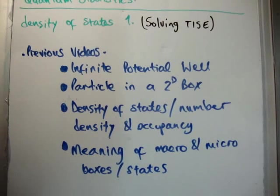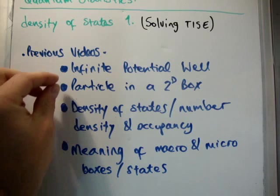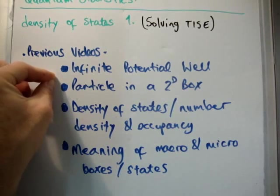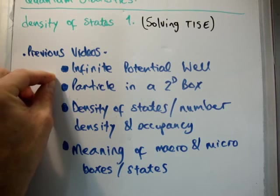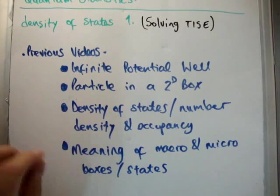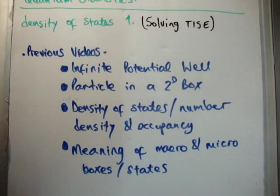So, the previous videos to this are as follows. In my quantum well section, I'd like you to look at the infinite potential well and the particle in a 2D box. I'd like you to look at my video called the density of states, the number density and occupancy, and the meaning of macro and micro boxes. The reason I want you to look at these is because of the Schrödinger equation, and I'm not going to do the details because I've done them there. And these two is just more giving you an insight as to what's coming next.